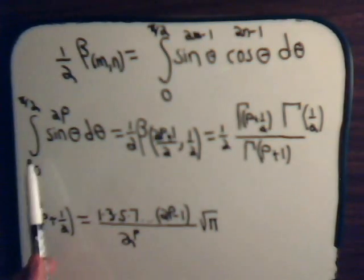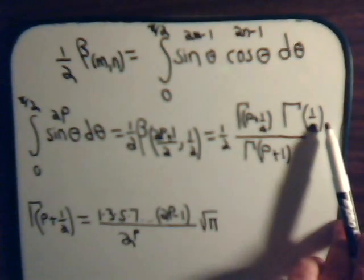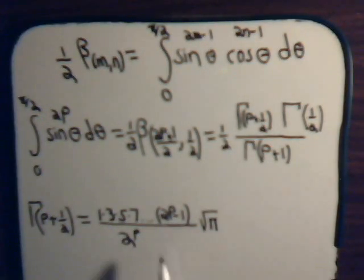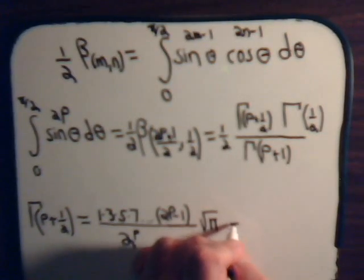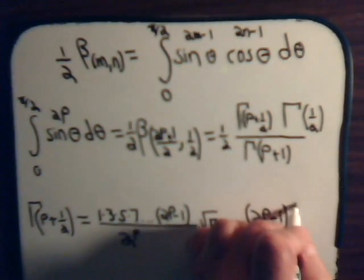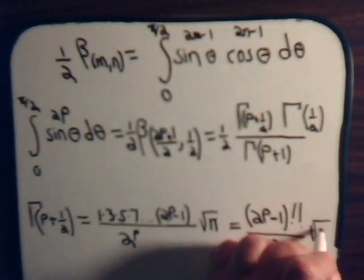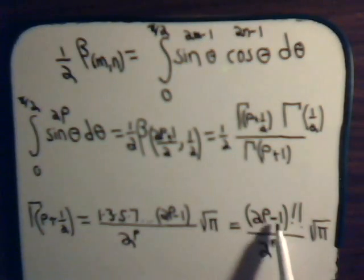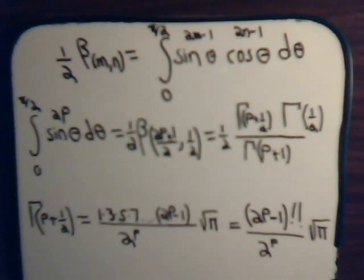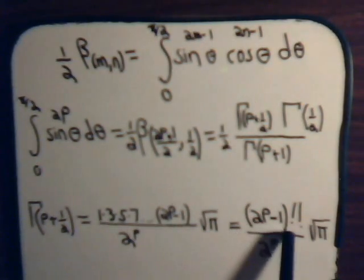So we have our integral expressed in terms of gamma functions, and we know each piece. Sometimes you see the numerator written as (2p minus 1) double factorial — the double exclamation sign indicates a factorial consisting only of odd numbers. So this is sometimes written as (2p−1)!! divided by 2 to the p times the square root of pi.